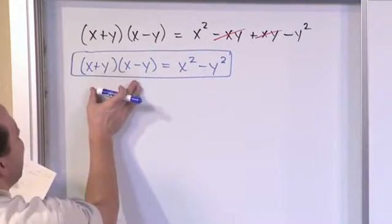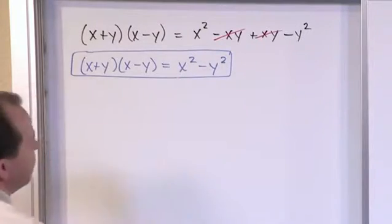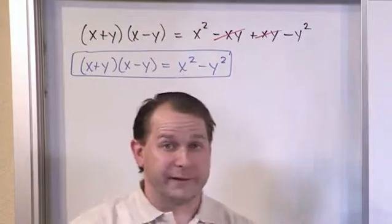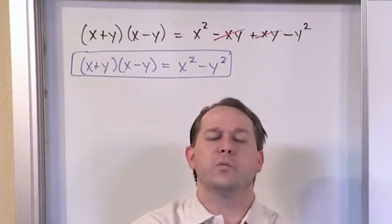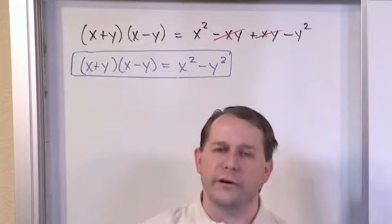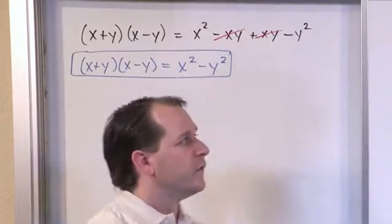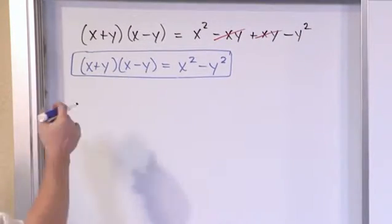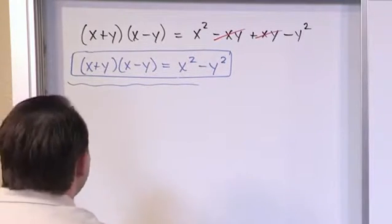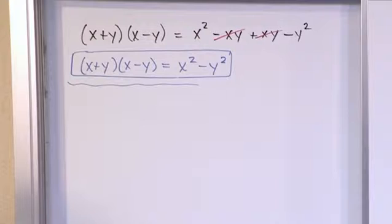And this is the factored form of this difference of two squares. So even though I showed you by multiplication, when you go the reverse way, you're basically factoring, and when you see a difference of two squares, you can always write it like this. So let's go and leave it on the board and do a couple of examples, and I'll show you how you could apply this to problems where you have to factor something.